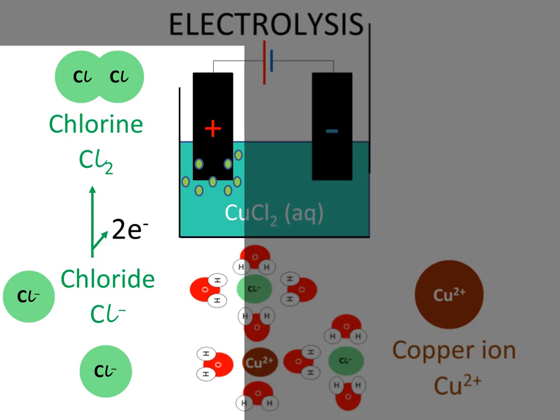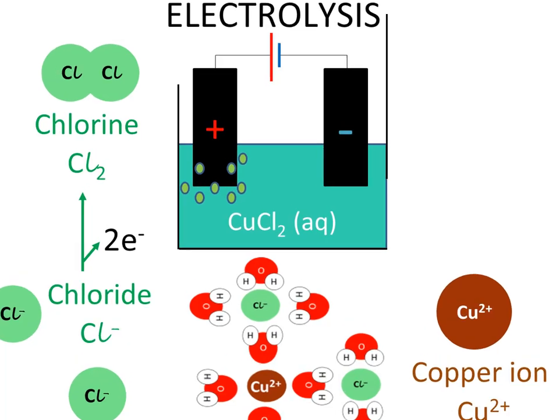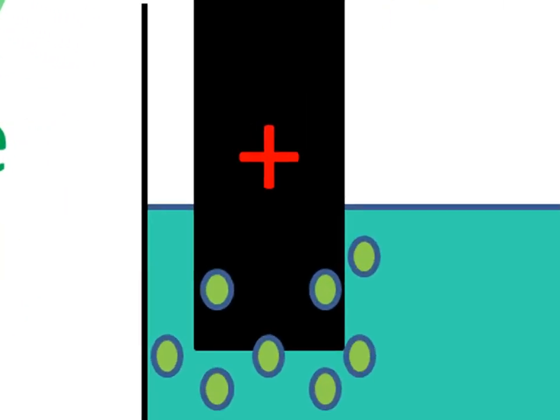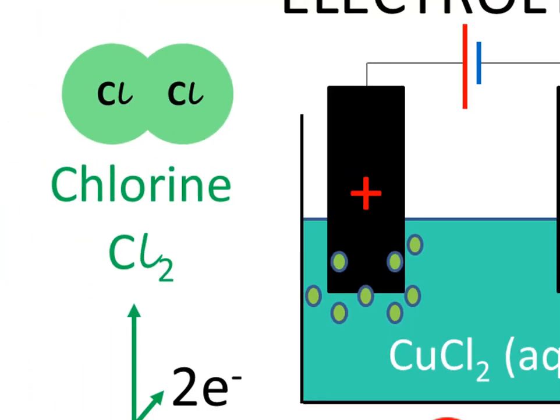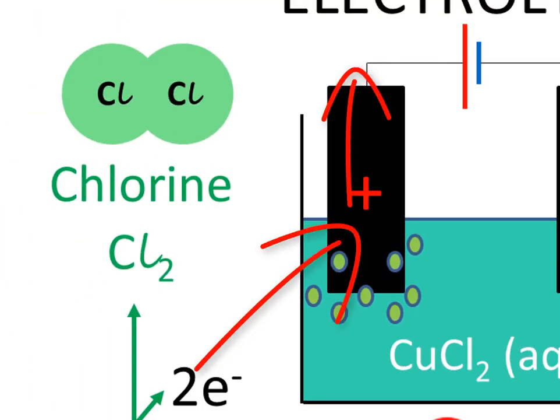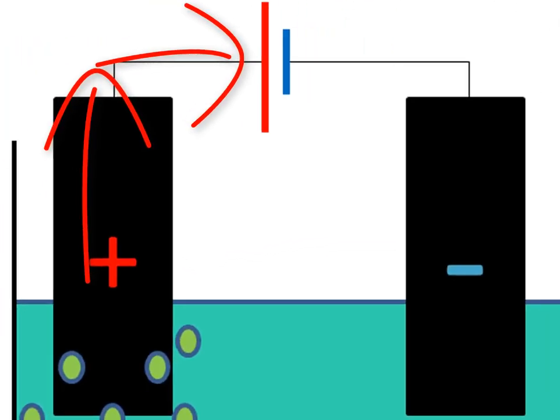Actually, many millions of ions will do that, forming many millions of chlorine molecules. All these chlorine molecules form bubbles around the positive electrode because chlorine is a gas at room temperature. The positive terminal of the battery sucks the electrons which came from the chloride ions from the positive electrode into the battery.